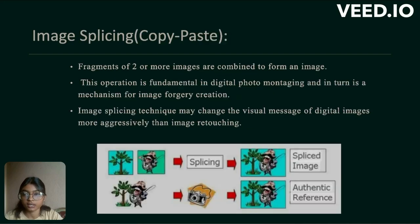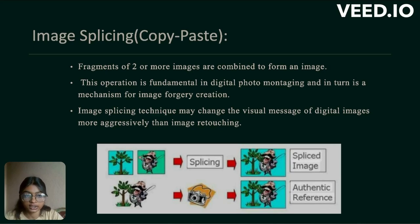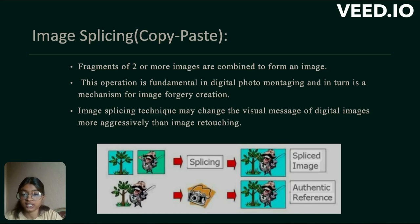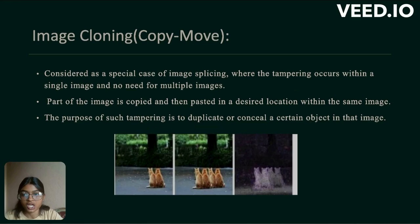Next is image splinting. Fragments of two or more images are combined to form a new image. This operation is fundamental in digital photo montage and is in turn a mechanism for image forgery creation. Image splinting technique may change the visual message of a digital image more aggressively than image retouching.